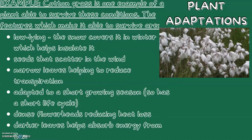Let's look at plant adaptations. An example is cotton grass, a plant able to survive in these conditions. It's low-lying, which means snow covers it in winter to help insulate it. It has seeds that scatter in the wind, and narrow leaves, helping to reduce transpiration and water loss.